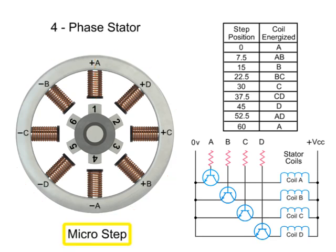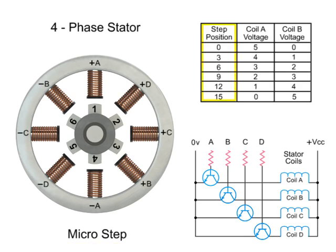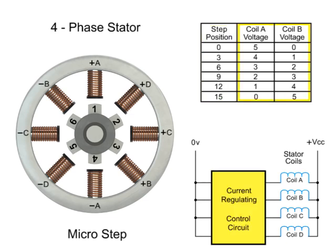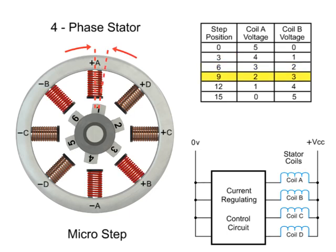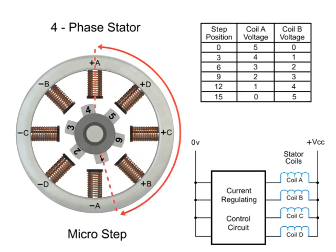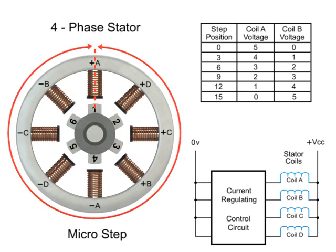Micro-stepping controls the current in the motor winding to a degree that further subdivides the number of positions between poles. To achieve micro-steps, the coils are only partially energized. As we apply a maximum voltage of 5 VDC to coil A and a minimum voltage of 0 VDC to coil B, rotor position 1 will line up. Reducing the voltage to coil A and increasing voltage to coil B, the rotor will begin to rotate clockwise and continue until the voltage is 0 at coil A and 5 at coil B. This process continues at all coils within the stator to provide accurate positioning. As you can see in this example, 120 steps are required to make a full rotation at 3-degree increments.